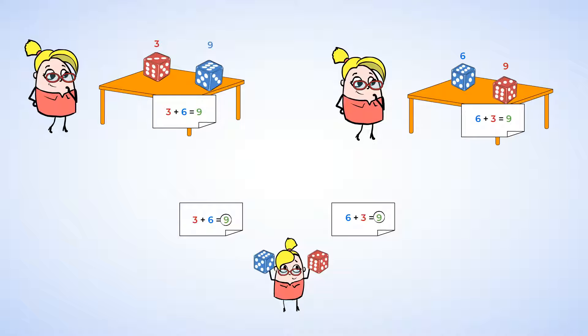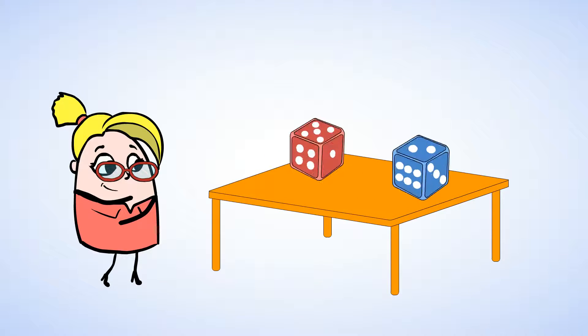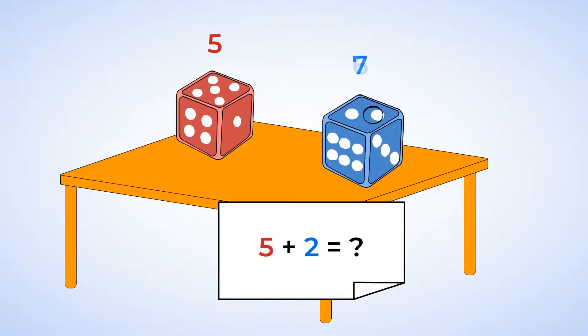Let's try that again to make sure it works with other numbers. Jenny shakes the dice again and rolls them on her desk. This time, the red die shows five, and the blue die shows two. Can you make an addition sentence with these numbers? Let's start with the red die first. Five plus two equals what? Well, let's count on, starting from five. Five, six, seven.